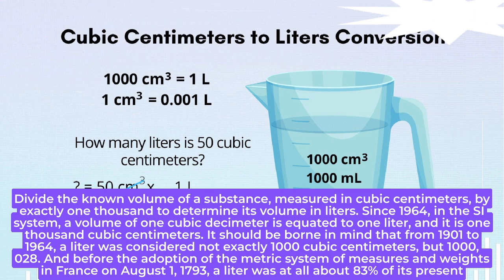It should be borne in mind that from 1901 to 1964, a liter was considered not exactly 1,000 cubic centimeters, but 1,000.028. And before the adoption of the metric system of measures and weights in France on August 1, 1793, a liter was at all about 83% of its present value.